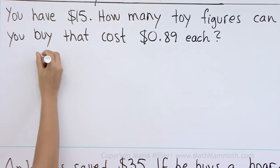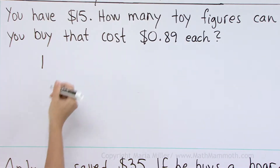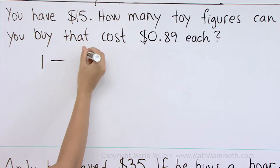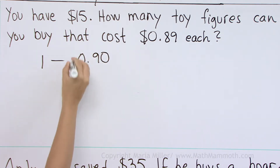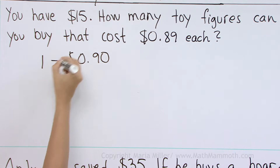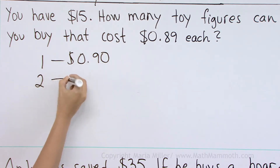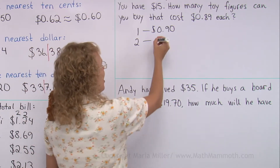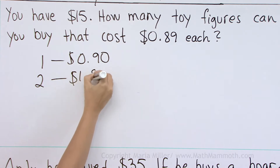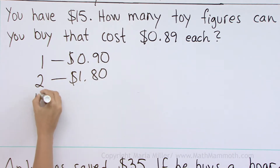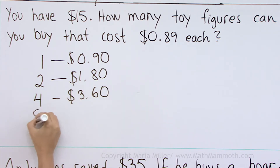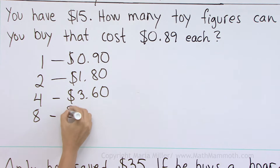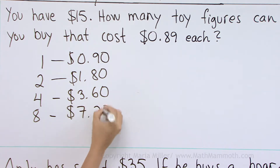One toy figure costs approximately 90 cents — rounding to the nearest 10 cents. Two would cost double that: $1.80. Let's keep doubling: four would cost $3.60, and eight would cost $7.20.